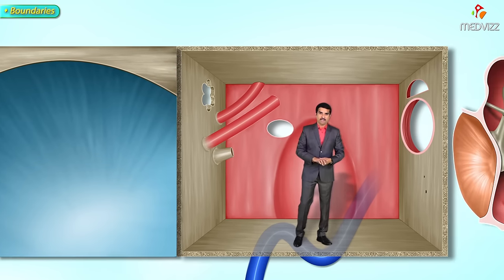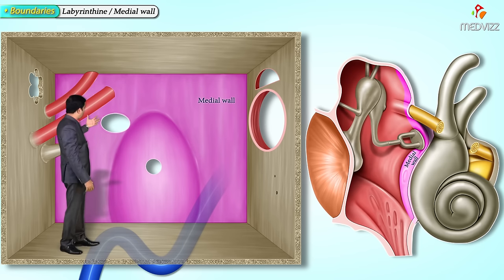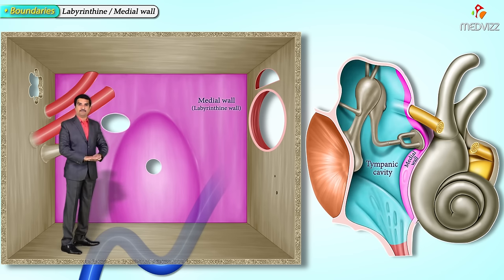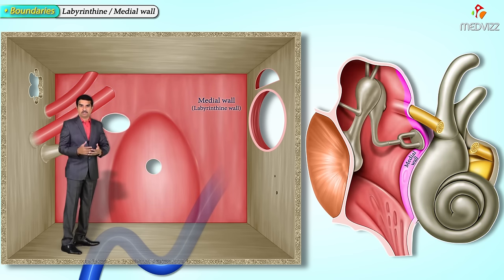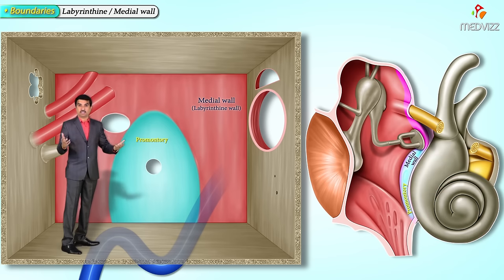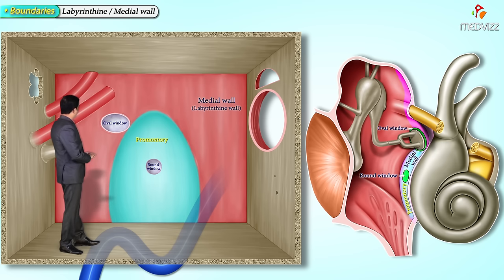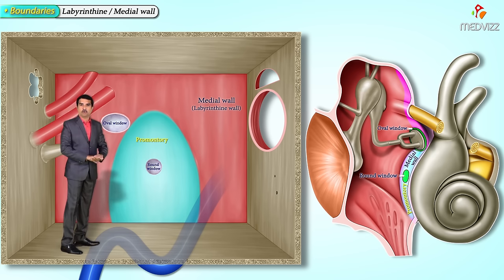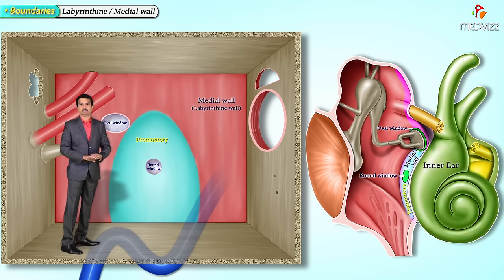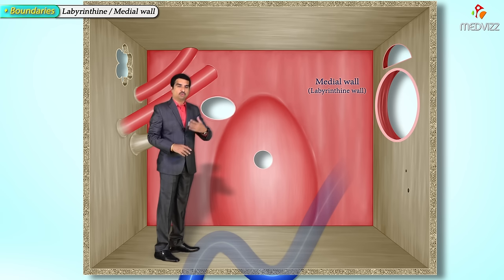The medial wall is called the labyrinthine wall. It separates the tympanic cavity from the inner ear. The basal turn of the cochlea forms the promontory of the labyrinthine wall. On the medial wall we can also see important structures like the round window and the oval window, which communicate with the inner ear.